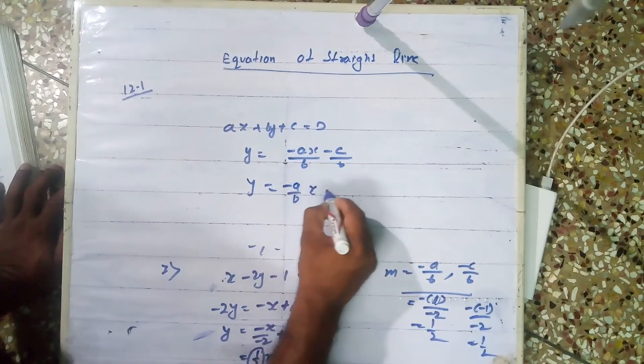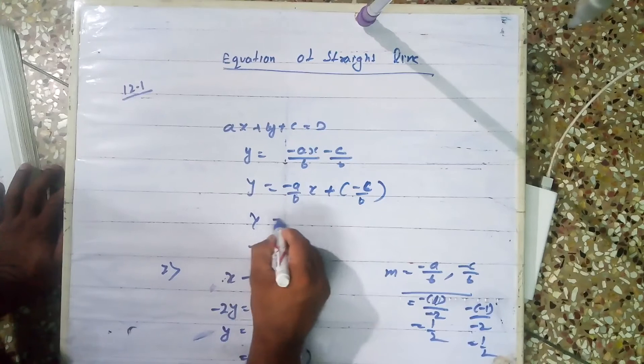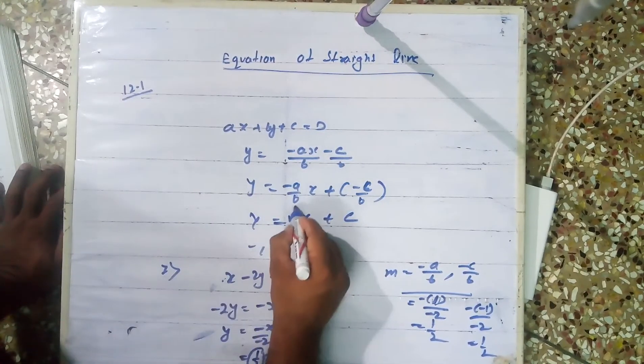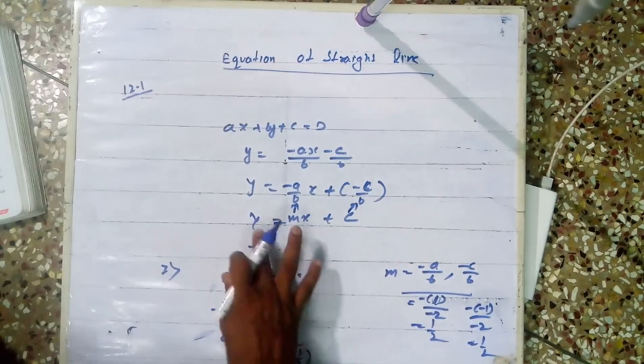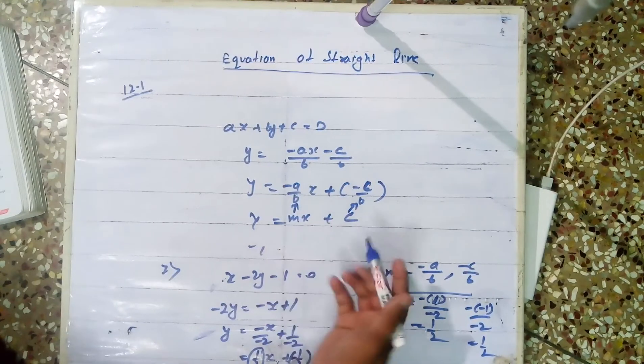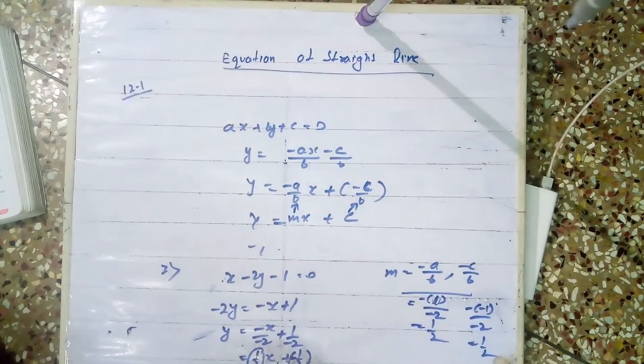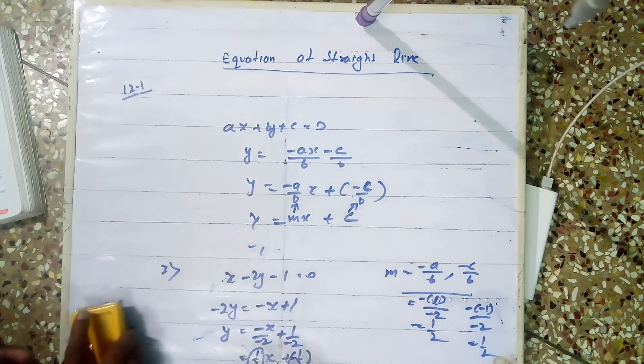This is the form of y equals mx plus c, where m is the slope and c is the y-intercept. This is the slope and intercept form. That's how I got this formula. You can use it directly if you want, or do it this way - that's up to you.